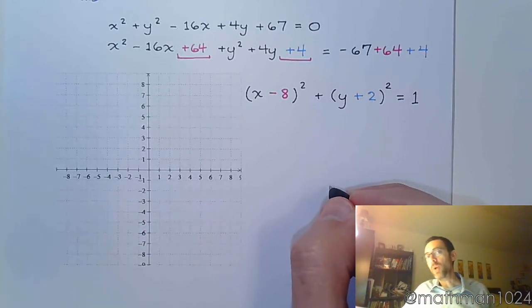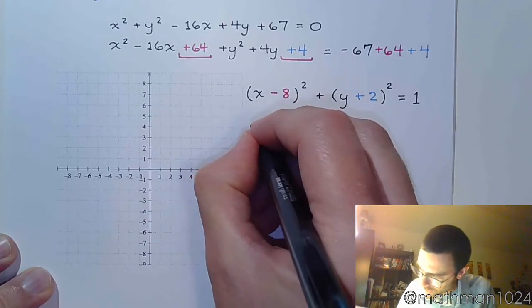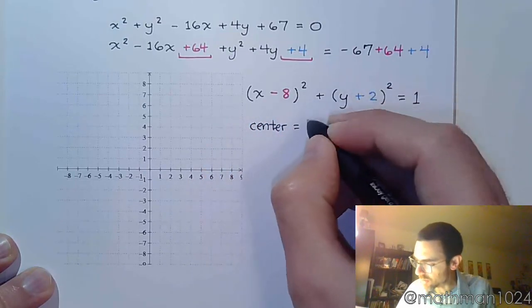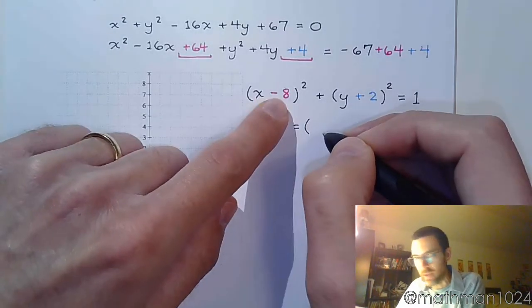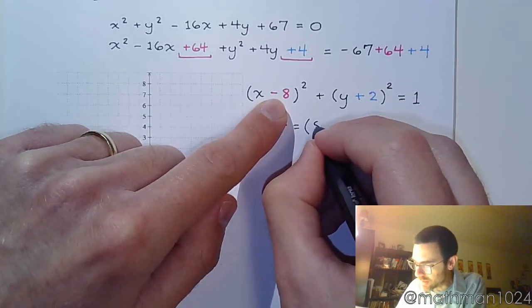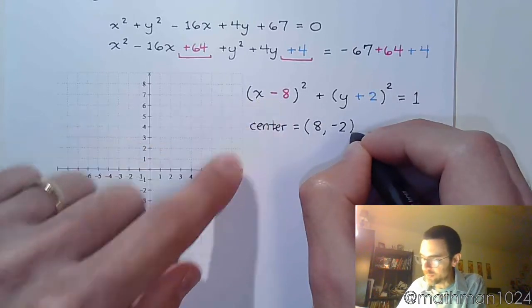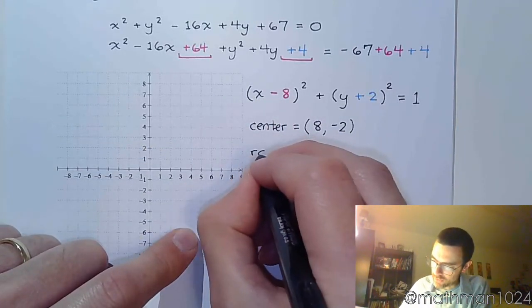We complete the square to put it in center-radius form, and now we can clearly identify the center. The center, the opposite of this guy, so it's going to be positive 8. And the opposite of positive 2, so it makes that negative 2.